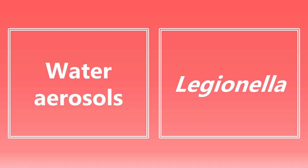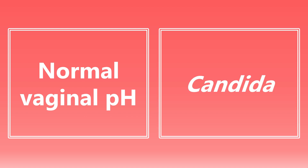Water aerosols — if we see this on the exam, we want to be thinking about Legionella. A lot of people make the association of Legionella with air conditioning units, but water aerosols is also an important association. Normal vaginal pH — this is important because this is going to be a sign of candida and candidiasis. Normal vaginal pH is about 4.0 to 4.5, and if you have a candidal infection, there is a normal vaginal pH, whereas with Gardnerella causing bacterial vaginosis and Trichomonas causing trichomoniasis, the pH is greater than 4.5. If it is a normal vaginal pH and there is an infectious process going on, you want to be thinking about candida.